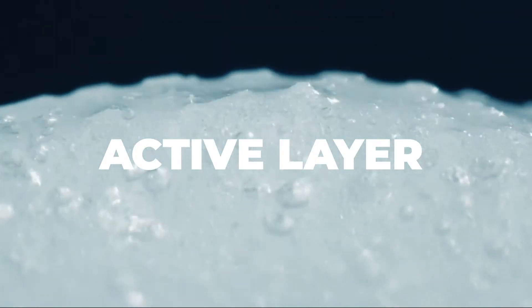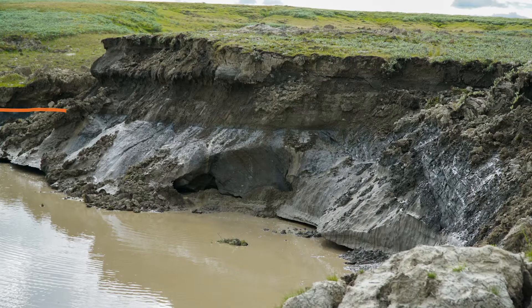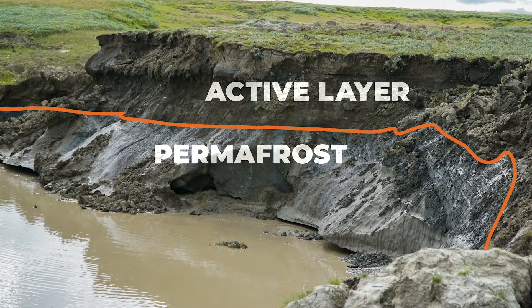In cold regions, the ground forms two layers. The surface, which constantly thaws and refreezes, that's the active layer. And below that, a layer that stays frozen, the permafrost. But permafrost isn't permanent.